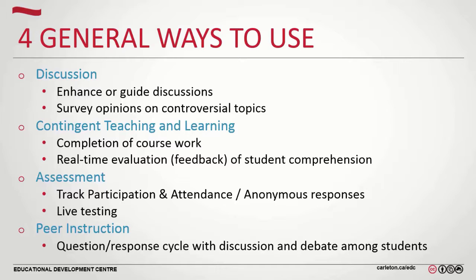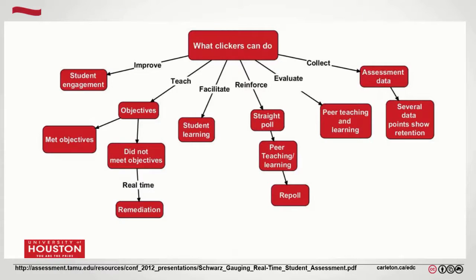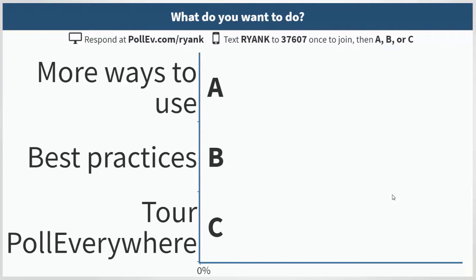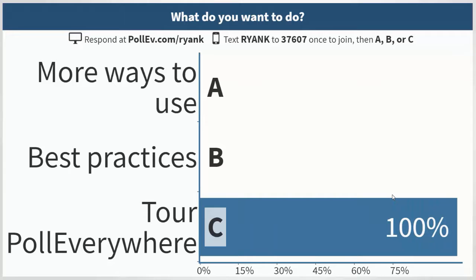Peer interactions — people are using this for think-pair-shares as well. You ask the students a question, get them to respond, send them off in groups to discuss their potential answer, and then bring them back to respond as well. This flow chart shows another way to look at what you can do: improve student engagement, teach, ask if meeting objectives, what sort of remediation will you do, is it facilitating student learning, reinforcing a point, evaluating students, or collecting information? So what do you want to do — look at more ways to use the tool, best practices, or take a tour of Poll Everywhere?